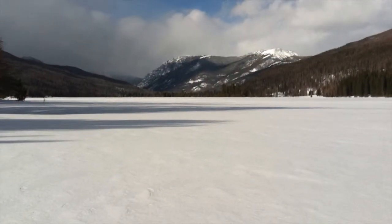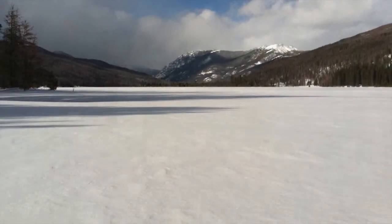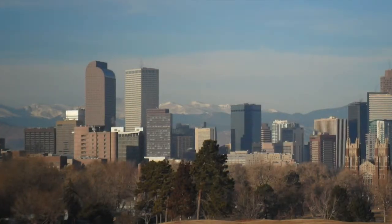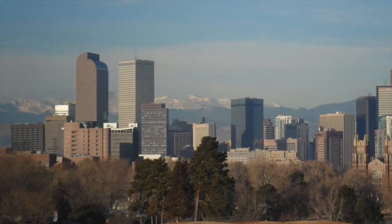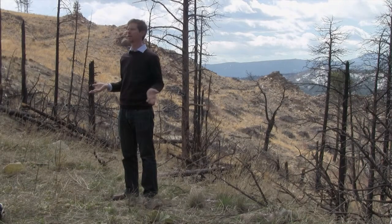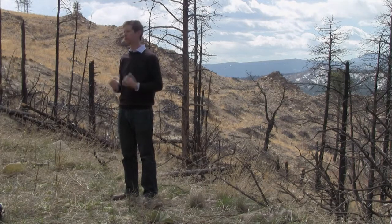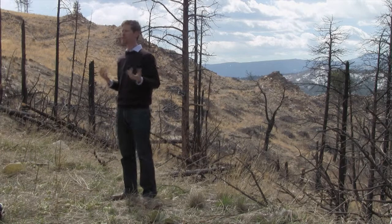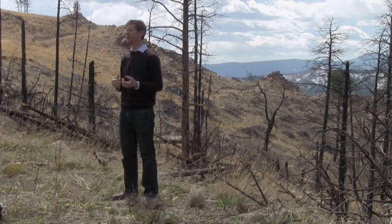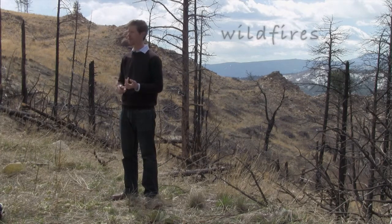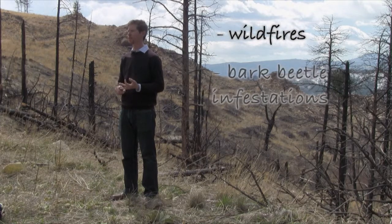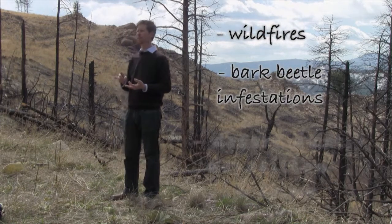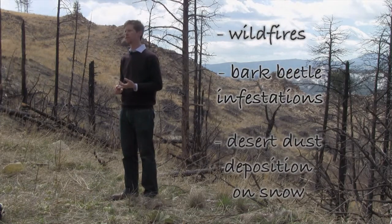It burned 169 homes and caused more than $200 million in damage. So why am I standing here on a burned-out landscape in a course about water in the western United States? It's because what happens here in our forested watersheds can have really significant impacts on our water supplies downstream. In this lecture I'm going to cover three major topics: wildfires, infestations of bark beetles, and the deposition of desert dust on snowpack.